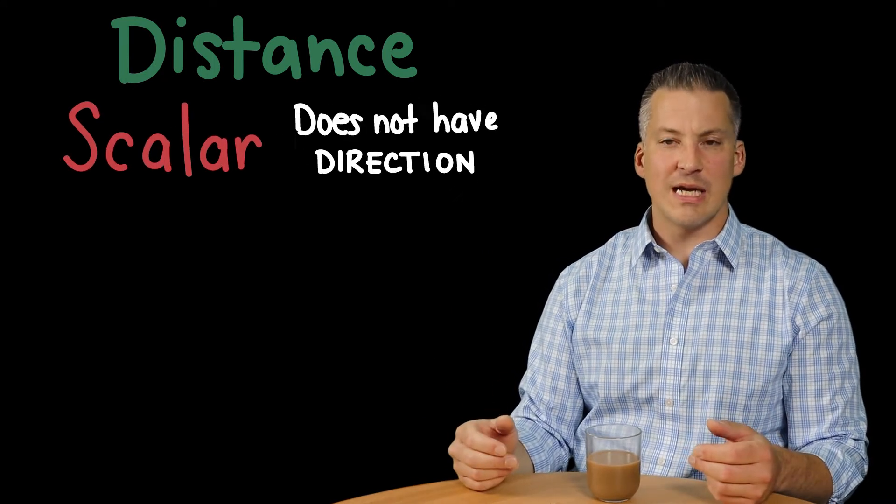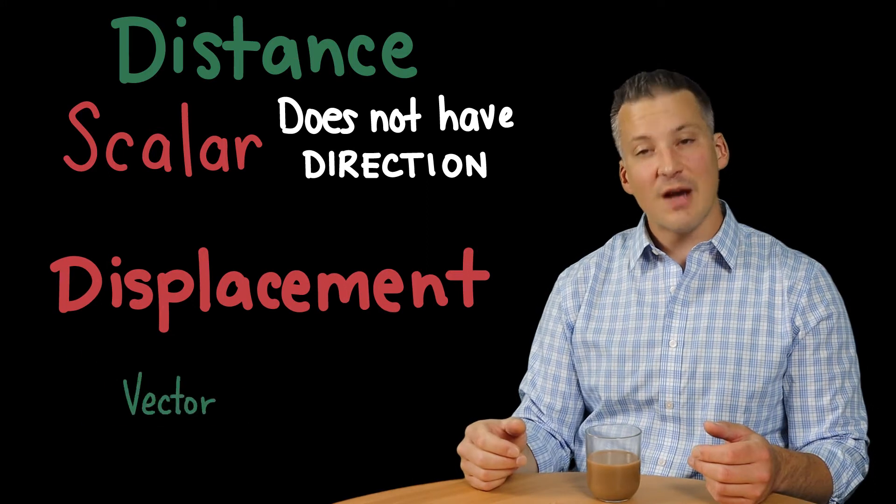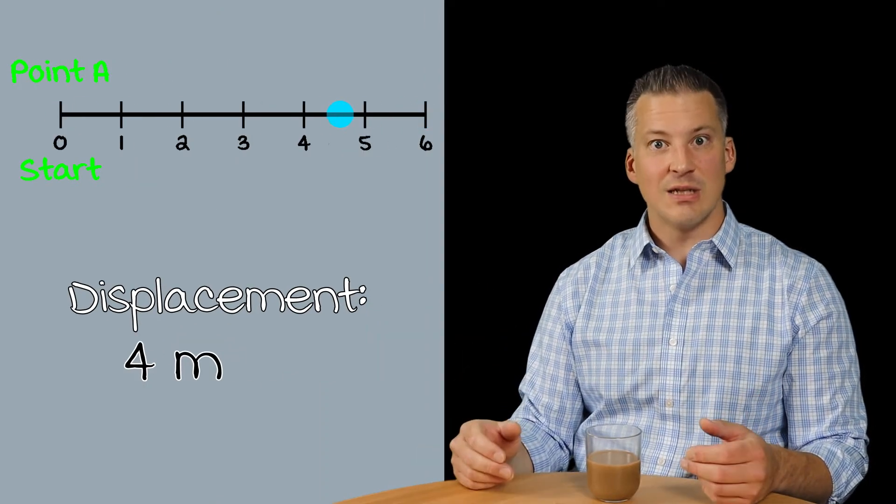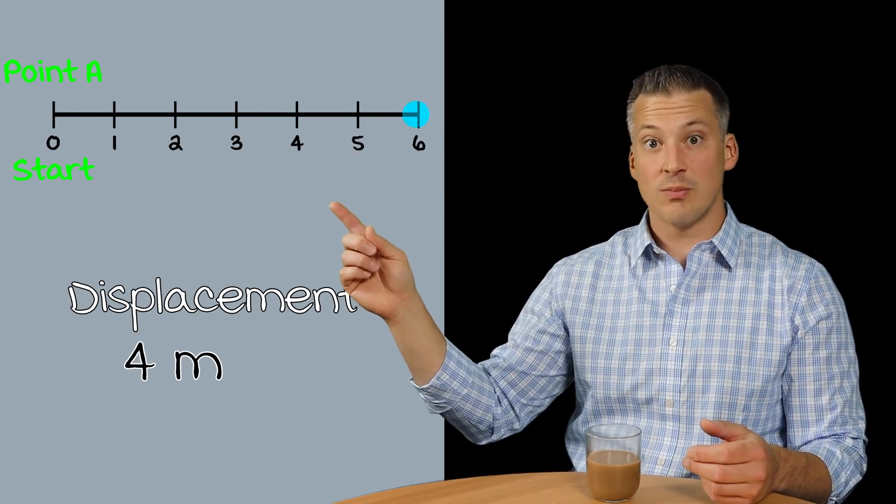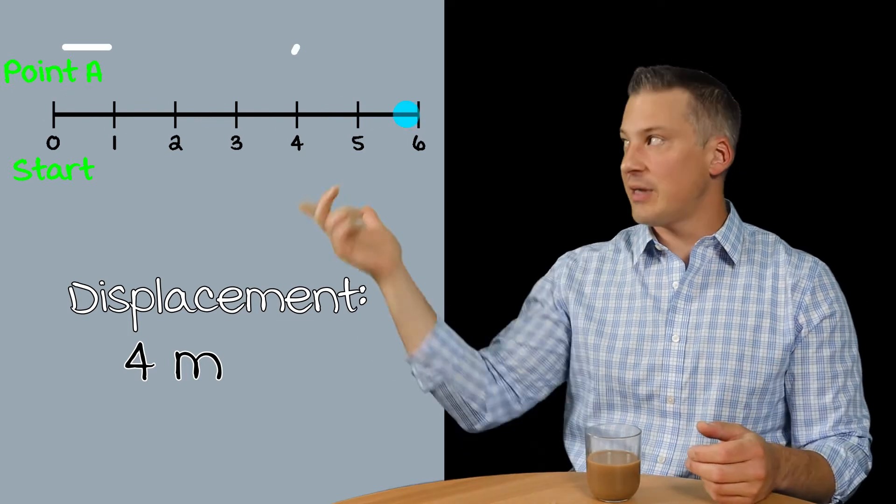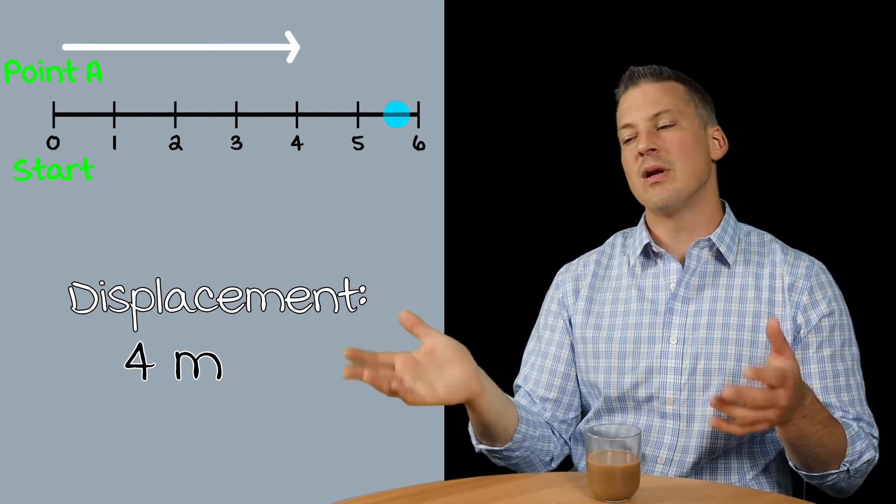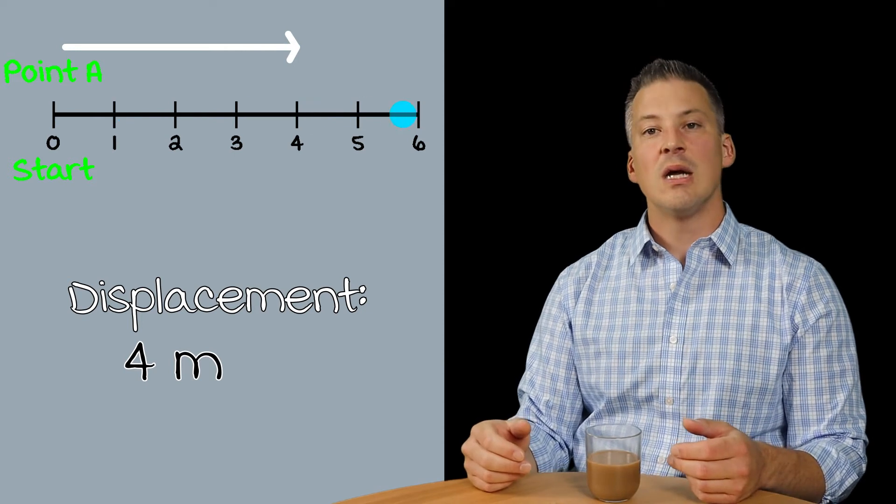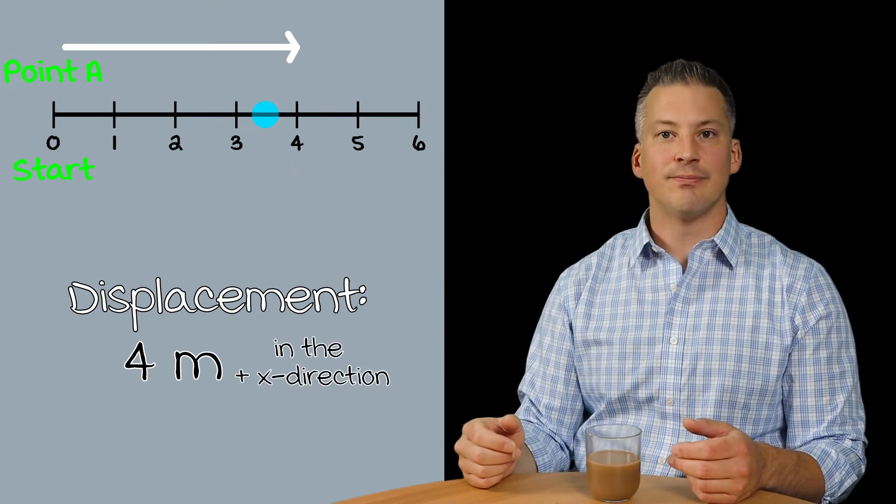Now, another thing about displacement is that we have to also give the direction. That's one of the big differences also with the difference between distance and displacement, is that distance is what's known as a scalar quantity. It doesn't take into account direction. Whereas displacement is a vector quantity. It takes into account direction. So we would say now that the displacement vector, we always draw vectors from start point to end point. So when we draw that arrow in, which way is it pointing? It's pointing along the positive x axis. So we can say that the displacement here is four units in the positive x direction.